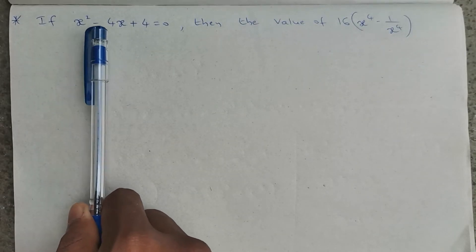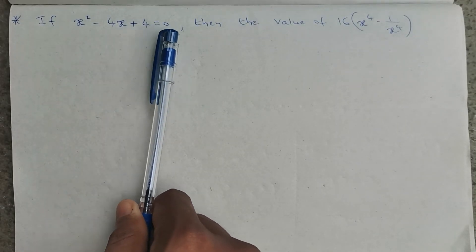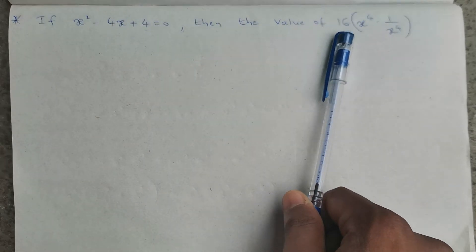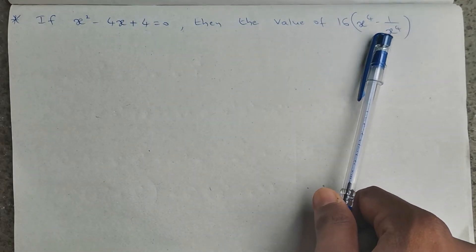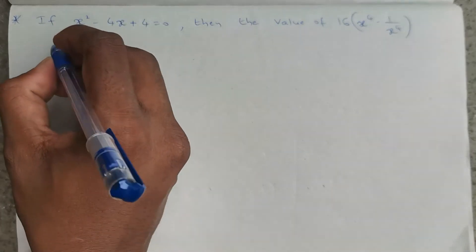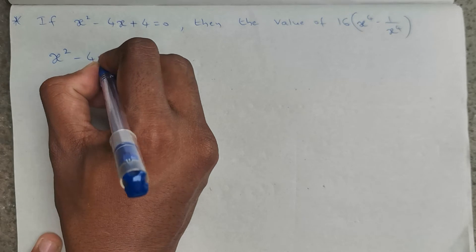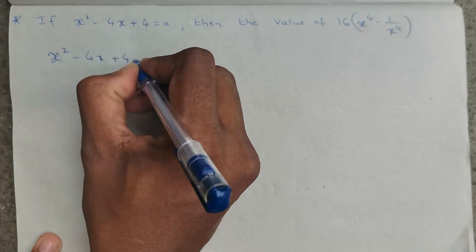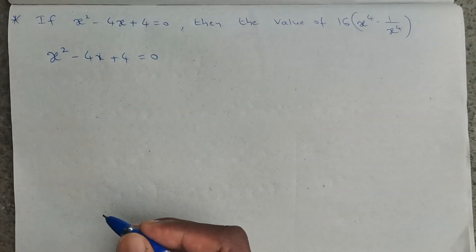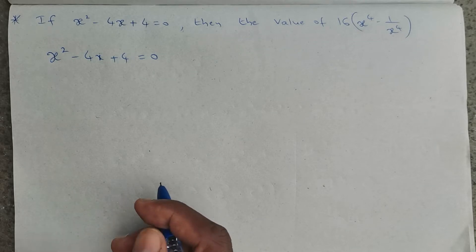If x squared minus 4x plus 4 is equals to 0, then find the value of 16 into x power 4 minus 1 by x power 4. Here the given quadratic equation is x squared minus 4x plus 4 equals 0. By splitting the middle term into two terms, I am going to find the x value.